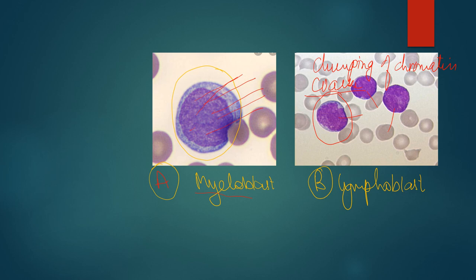These are very simple features and a very simple mnemonic. M for myeloblast, M for everything more: more in size, more amount of cytoplasm, more number of nucleoli, presence of Auer rods, and finer chromatin. Whereas for lymphoblast, L for less: less amount of cytoplasm, less in size, less number of nucleoli, and no Auer rods. I hope you will be able to identify these cells. Thank you.